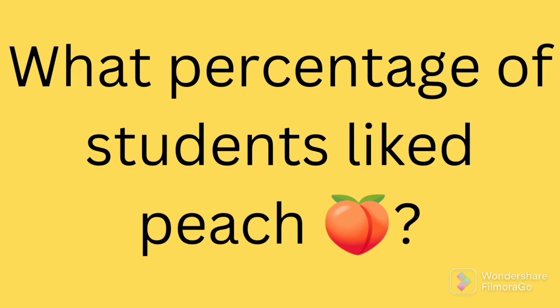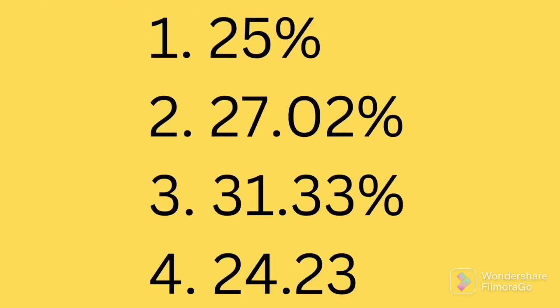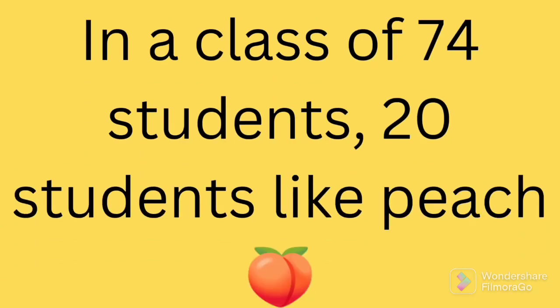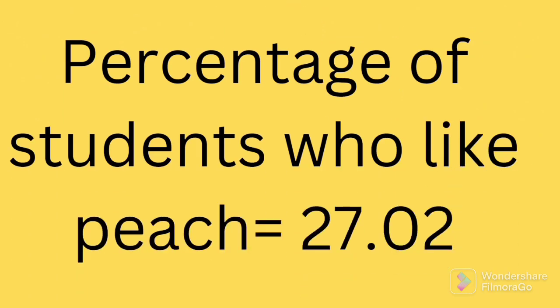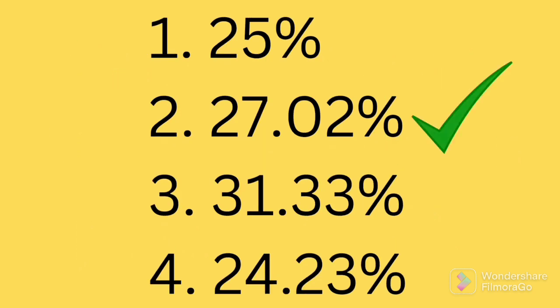Based on the same graph, the another question is what percentage of students like peach. The options are 25%, 27.02%, 31.33% or 24.23%. From the given graph we can say that in a class of 74 students, 20 students like peach. Therefore the percentage of students who like peach is equal to 20 divided by 74 into 100, which on simplification gives 27.02. Therefore second option 27.02% is the correct answer.